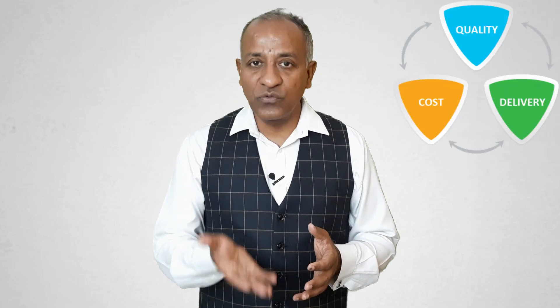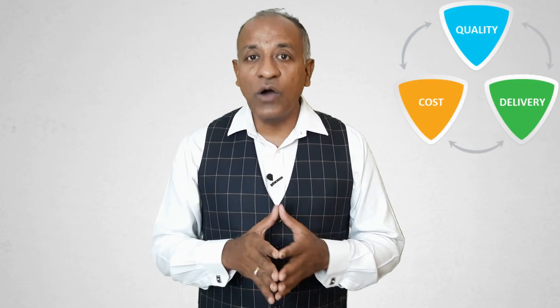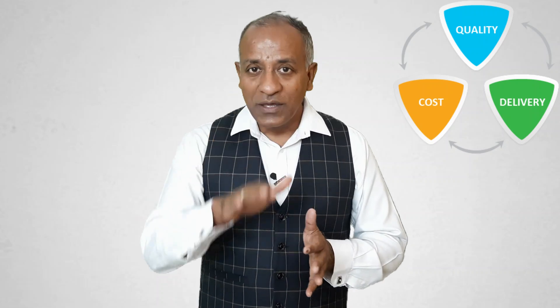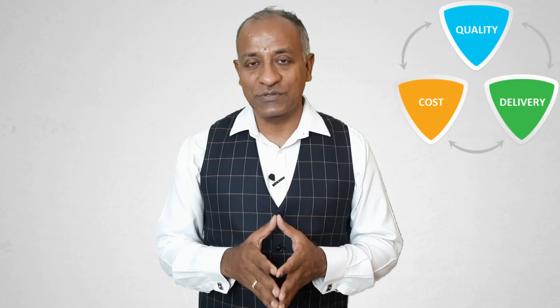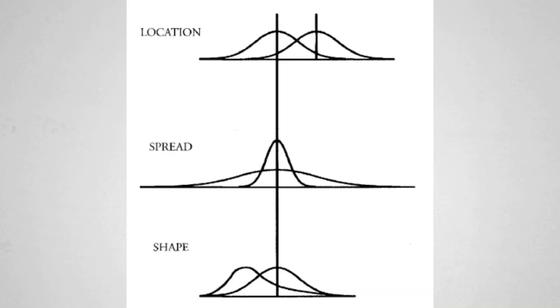When we talk about SPC, it primarily has three key objectives. The first is how we can improve productivity. The second is how we can increase the quality level. And the third is how we can reduce wastages and cost. When we talk about SPC and the control chart, there are three key things we generally look at: the shape, the spread, and the location.